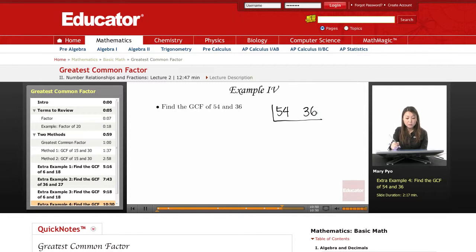These are both even numbers, so I know that a 2 goes into both of them. I can just take that 2 out. Now, 54 divided by 2 is 27, and 36 divided by 2 is 18.